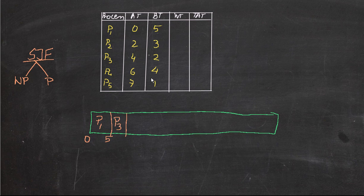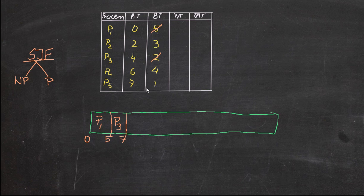So P3 executes from 5 to 7 (5 plus 2 is 7). Now within 7 seconds, all remaining processes have arrived — P4's arrival time is 7 and P5's arrival time is 6, so both arrived while the CPU was executing P3. P1 and P3 are now complete. The remaining processes are P2, P4, and P5. The shortest job among them is P5, so we execute P5: 7 plus 1 is 8.